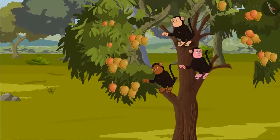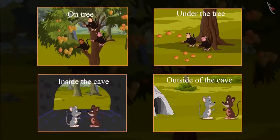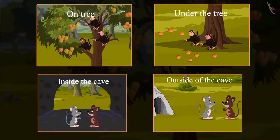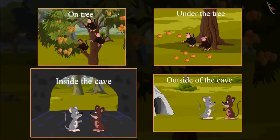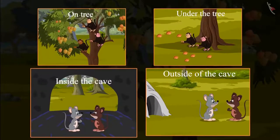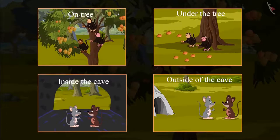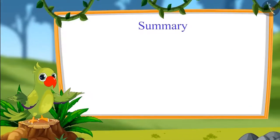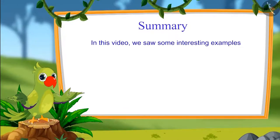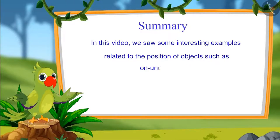So children, we saw that few things were on the tree and few were under the tree, few were inside and few were outside. These are called positions of objects. That was all for today. In this video we saw some interesting examples related to the position of objects such as on, under, inside, and outside.